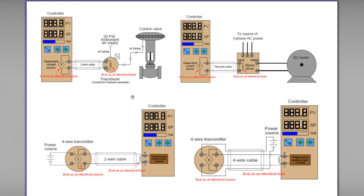Hello. Today I am going to discuss about electrical source and electrical load for instrumentation. For any circuit, we need a minimum of one power source and one load. If there is a circuit with only the power source without any load, it may cause fire in a circuit due to lowest resistance in a circuit. So the minimum requirement in a simple circuit is one power source and one load.